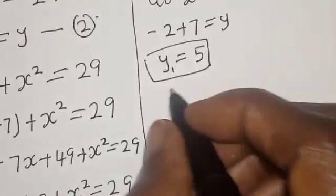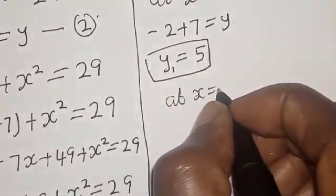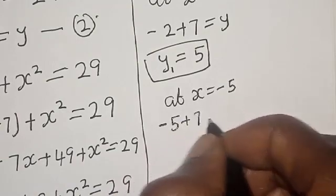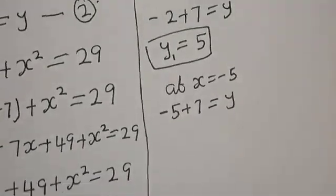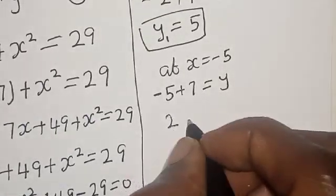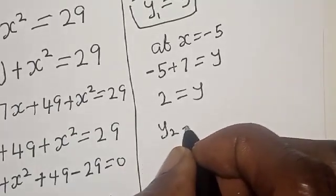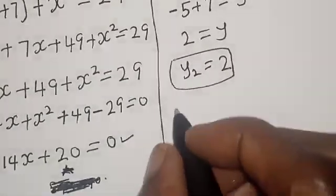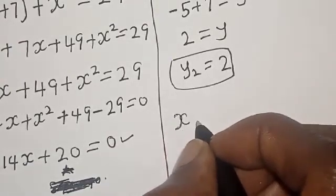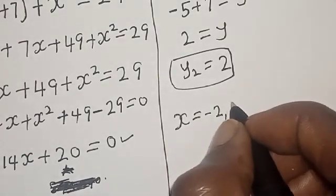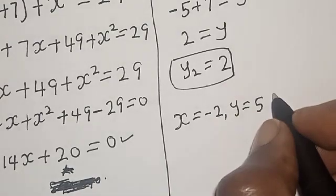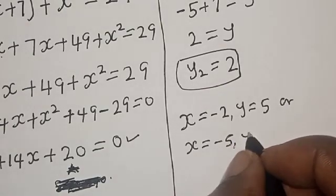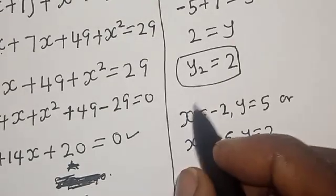For y₂, when x is equal to minus 5, we have minus 5 plus 7 is equal to y, so y₂ is equal to 2. Our final answer is: x equals minus 2 and y equals 5, or x equals minus 5 and y equals 2.